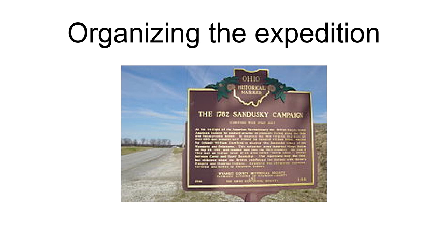Crawford had also taken part in the failed Squaw Campaign. The nearly 60-year-old Crawford had been reluctant to volunteer, but did so at the request of General Irvine. Williamson, although popular with the militia, was in disfavor with regular army officers such as Irvine because he had allowed the Gnadenhutten massacre. Hoping to avoid a repetition, Irvine made it known that he favored Crawford's election as commander. The election, which was acrimonious, ended in a close vote: Crawford received 235 votes to Williamson's 230. Crawford took command, and Williamson became second in command with the rank of major.